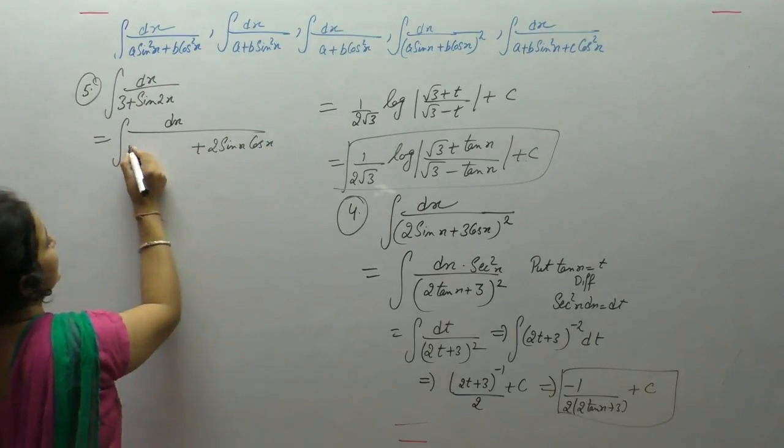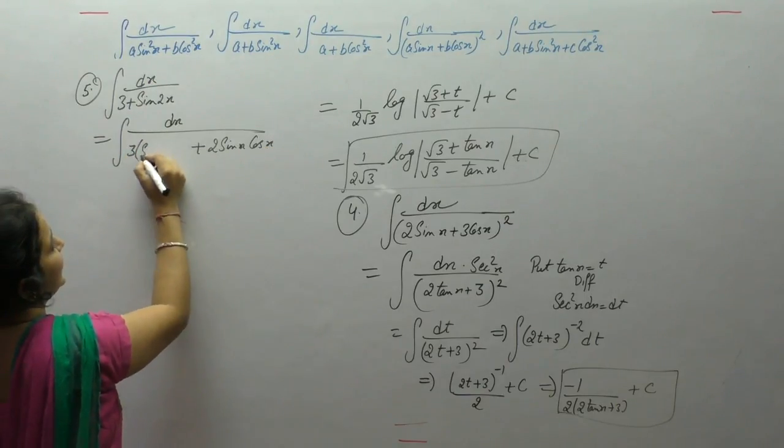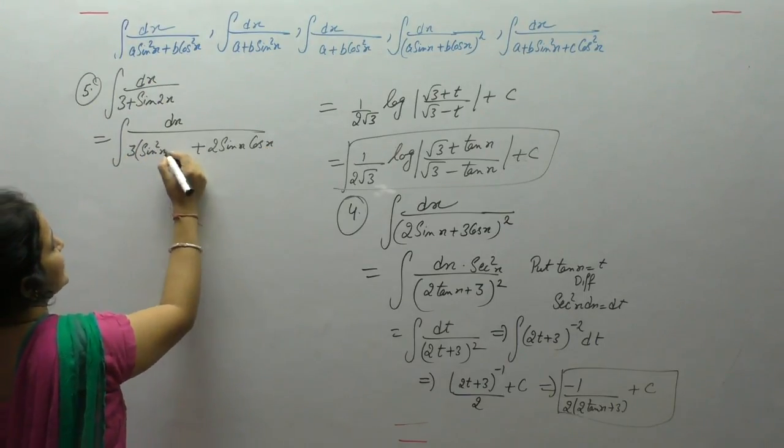3 is constant, 3 into 1, we can write 1 as sin square x plus cos square x.